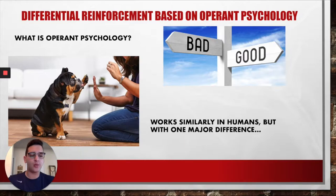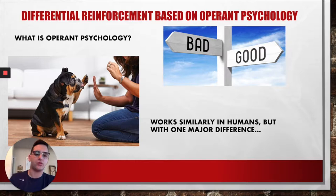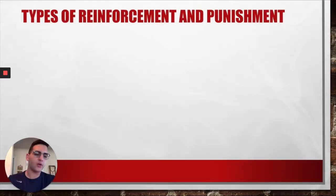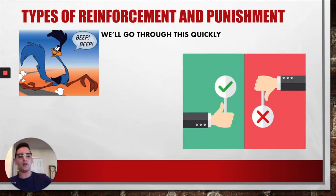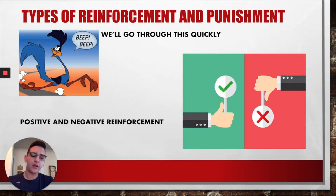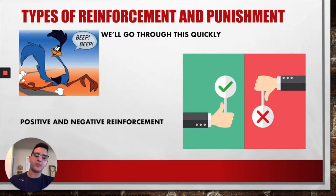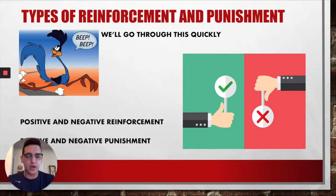This is a simplified example because operant psychology works slightly differently in humans. In humans, our reinforcers and punishments are socially derived from our intimate social groups. There are different types of reinforcers and punishments: Positive Reinforcement is when something positive is received; Negative Reinforcement is when something punishing is avoided; Positive Punishment is when something punishing is applied; and Negative Punishment is when something rewarding is lost.